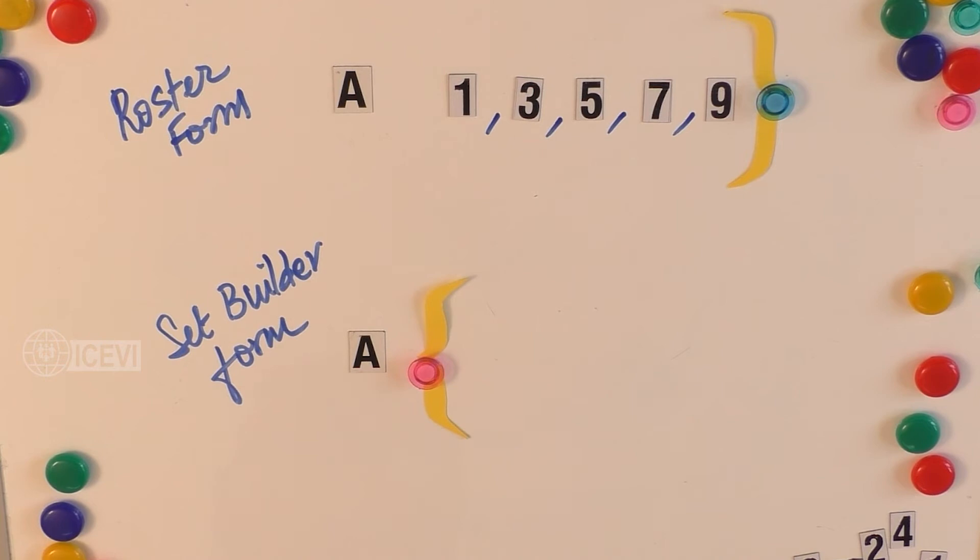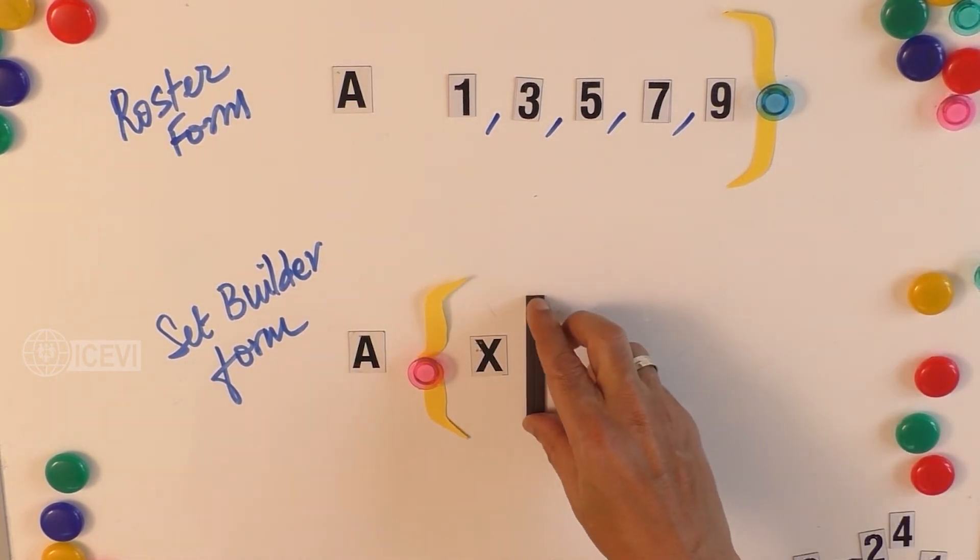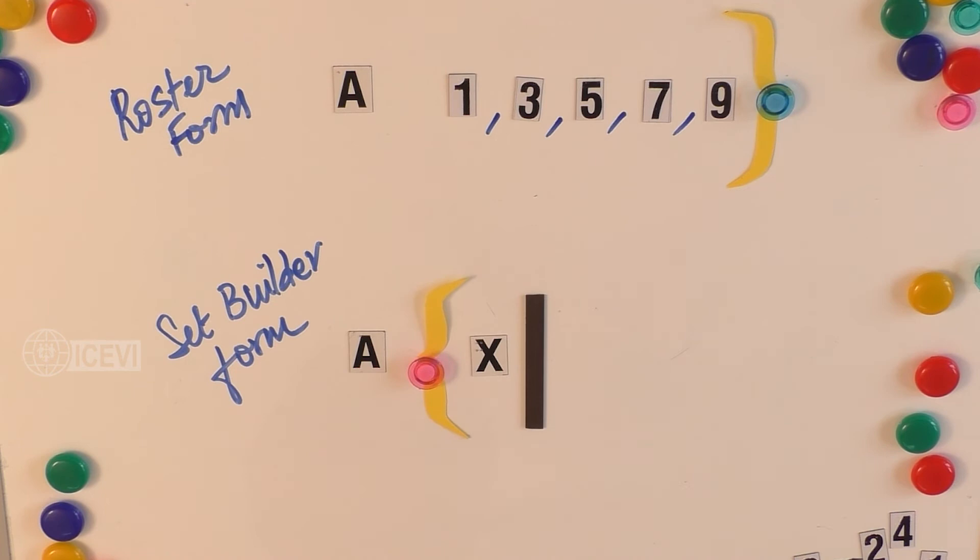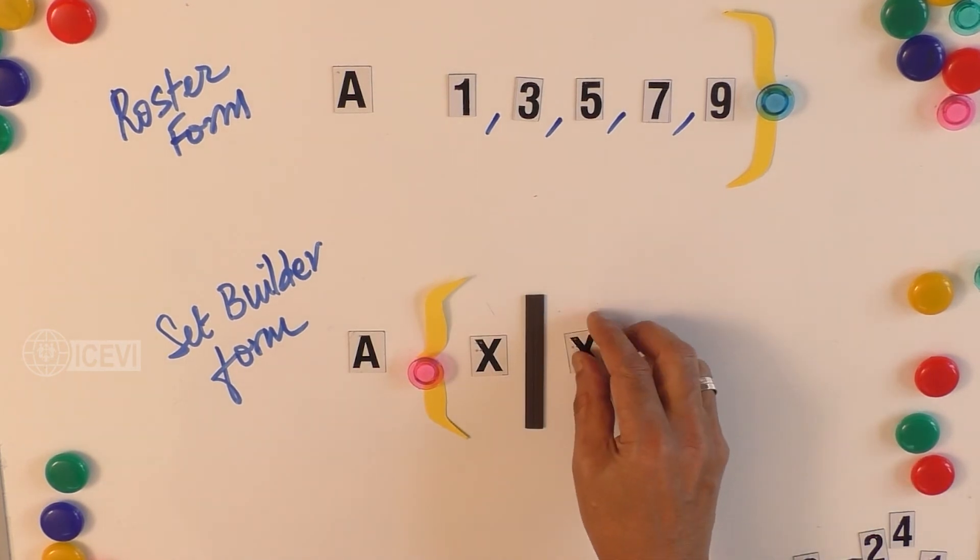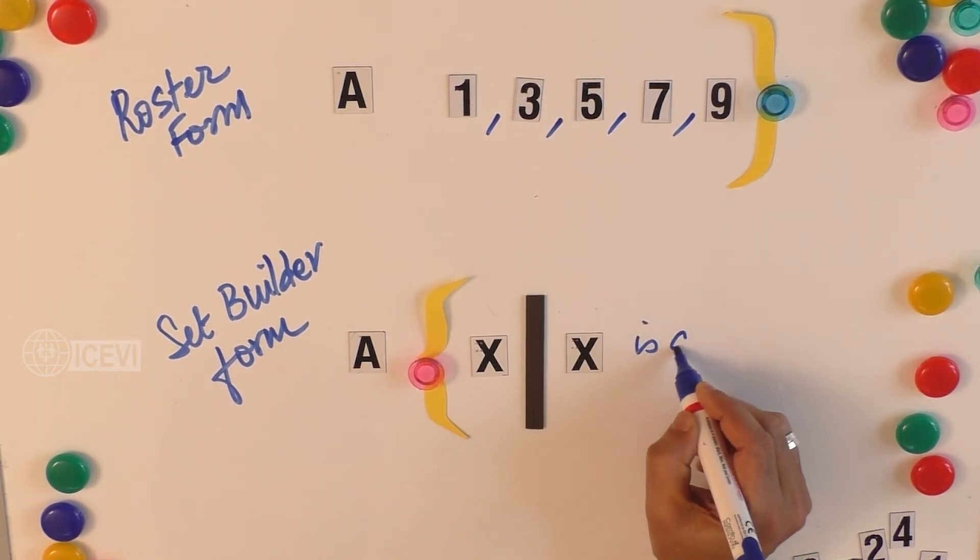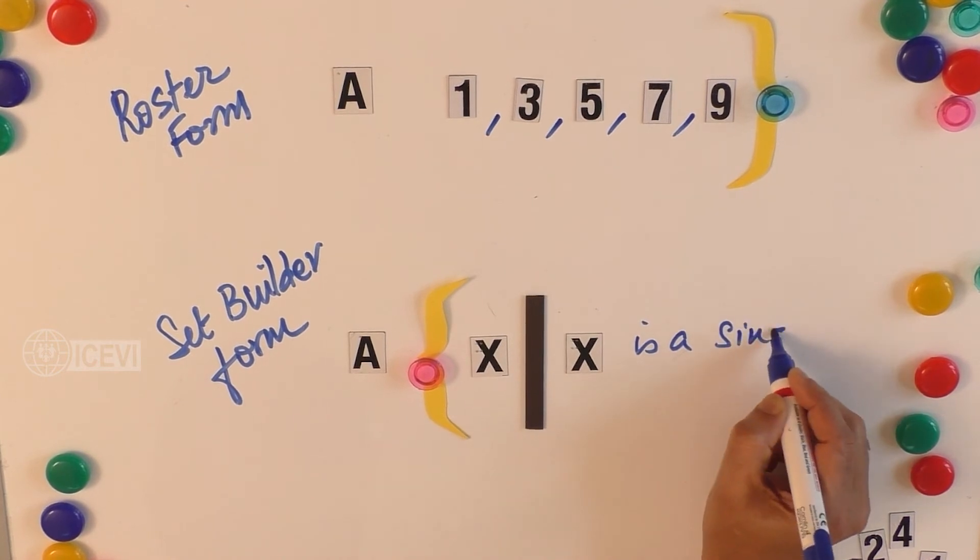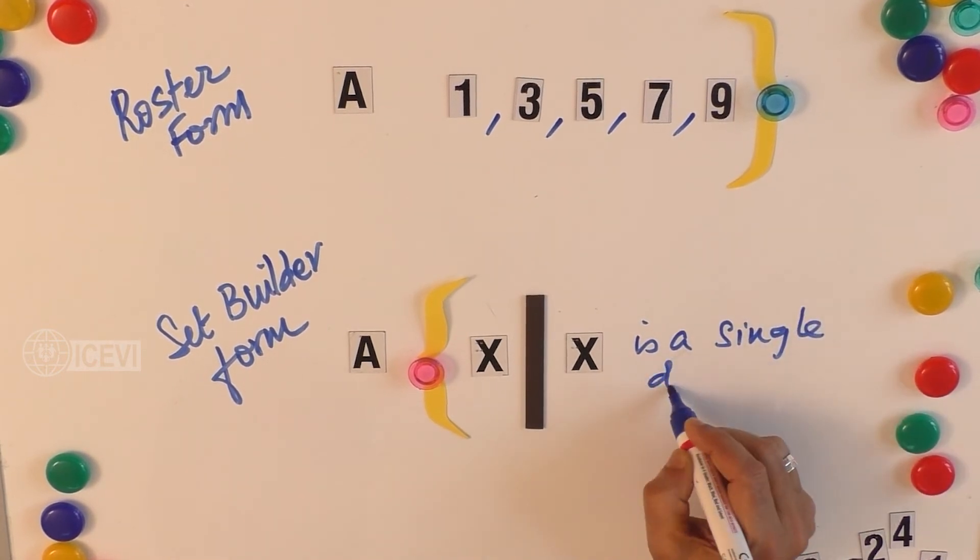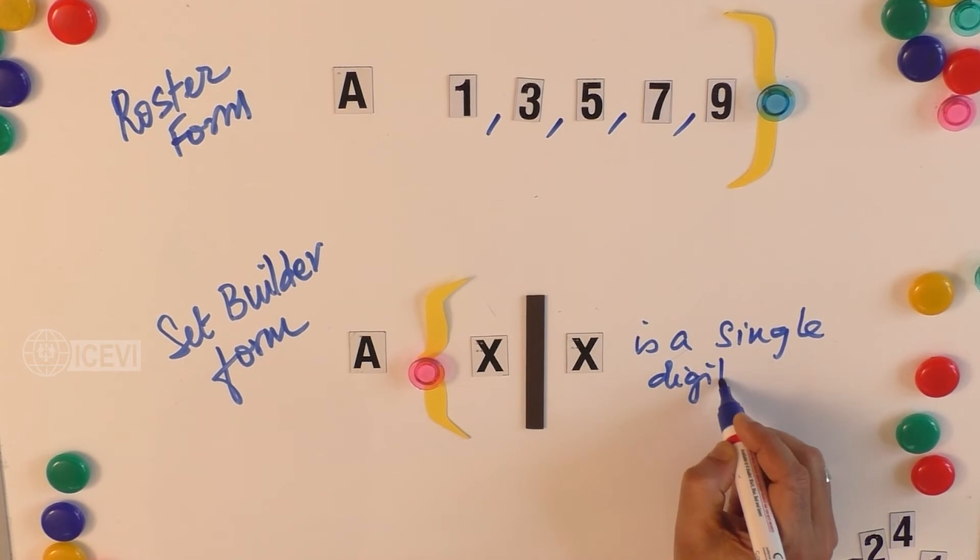One element. And that element we just call X. And after X, we put a vertical bar and then give an attribute to the X. So here we say X is a single digit odd number.